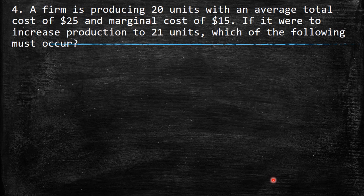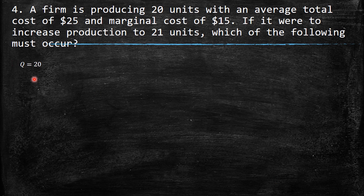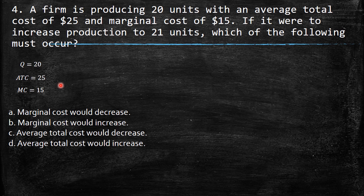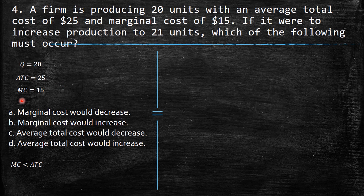The fourth question: a firm is producing 20 units with an average total cost of $25 and marginal cost of $15. If it were to increase production to 21 units, which of the following must occur? One important fact here is that you automatically recognize that the marginal cost is lower than the average total cost.